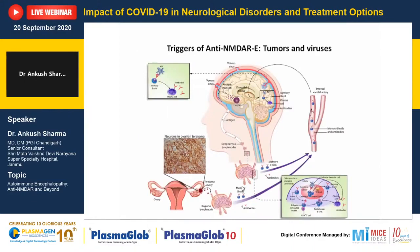Two triggers for anti-NMDAR encephalitis have been delineated. First is the teratoma — nearly 50% of patients have it. Teratoma is a tumour with different cell lineages, including neurons expressing NMDAR antigen, against which antibodies are formed, travel through the blood, breach the choroid plexus, and attack NMDAR receptors in the brain. Similarly, in herpes encephalitis, local brain destruction leads to antigen presentation to naive B cells, ultimately forming plasma cells and antibodies causing similar disease.